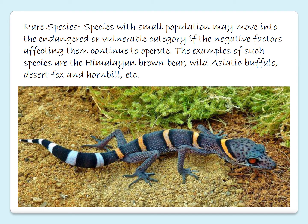Rare species: species with small population may move into the endangered or vulnerable category if the negative factors affecting them continue to operate. Examples of such species are the Himalayan brown bear, wild Asiatic buffalo, desert fox, and hornbill, etc. These animals are rarely found in the near environment.